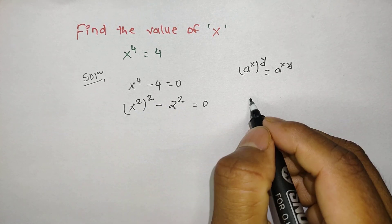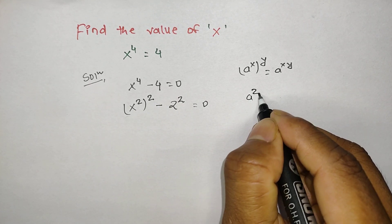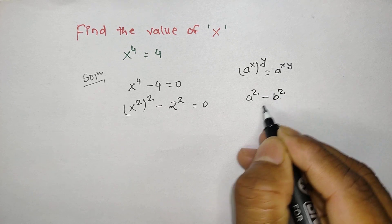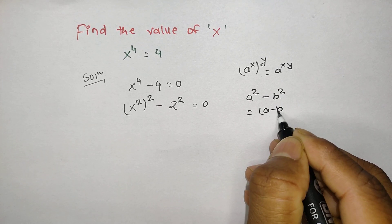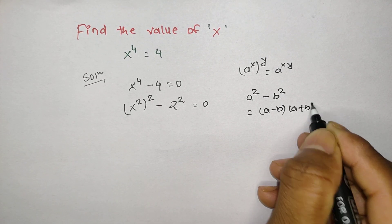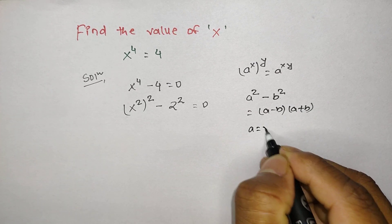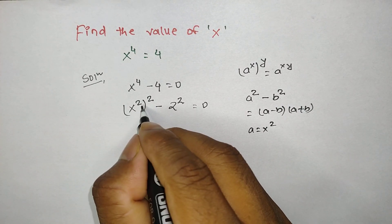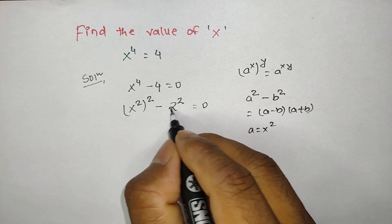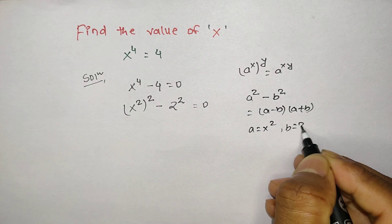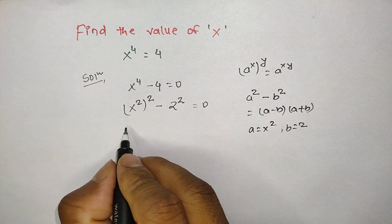If you look at the left hand side clearly, our left hand side is in the form of a square minus b square, which has the formula a minus b times a plus b. Here our a is x square in bracket form, and our b is the base, which is 2. So we can put the values: x power 2 minus 2 times x power 2 plus 2 equals zero.